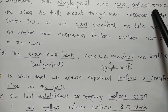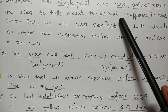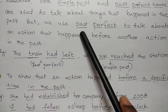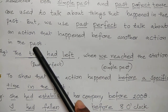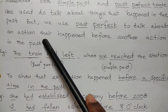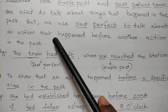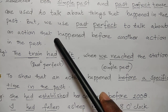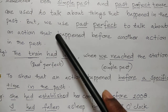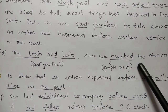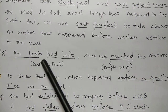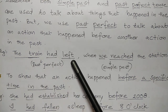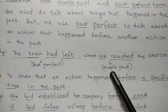Remember: both simple past and past perfect tense are used to talk about things that happened in the past. But we use past perfect to talk about an action that happened before another action in the past. When we use the past perfect tense, there will be two actions at a time — the first or earlier action will be in past perfect, the second one will be in simple past. Example: 'The train had left when we reached the station.' The first action is in past perfect — 'had left'; 'left' is the past participle of 'leave'. 'When we reached the station' — 'reached' is in simple past.